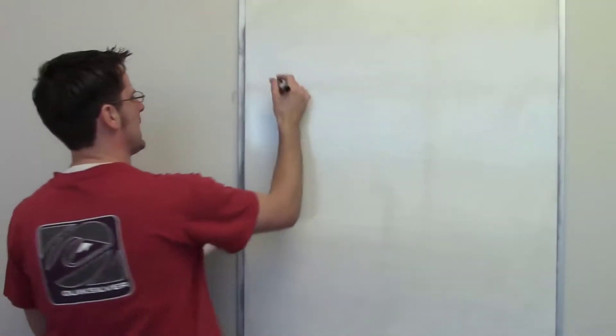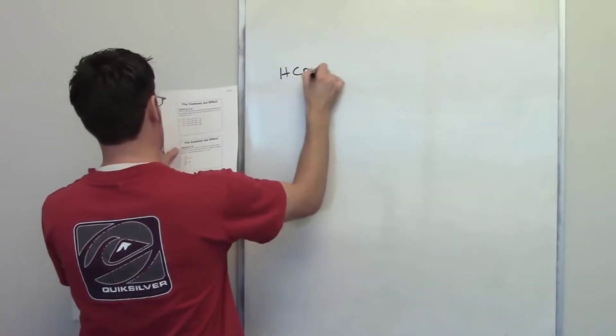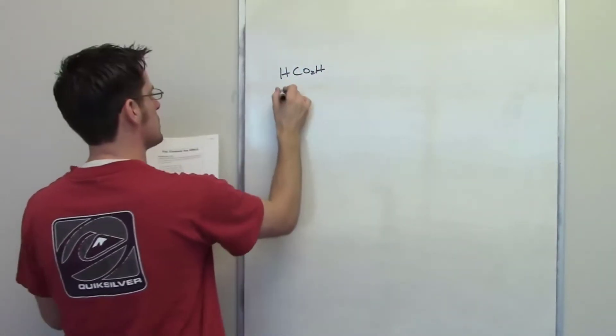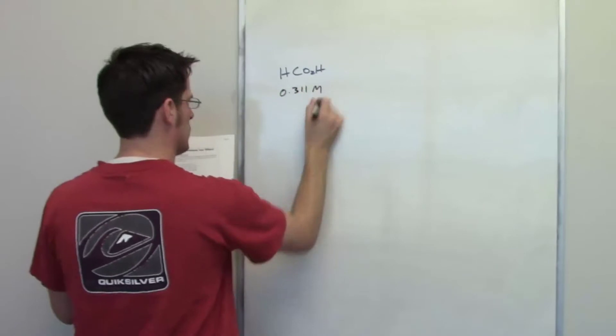This question involves formic acid, another weak acid, and it tells us that the solution is 0.311 molar in formic acid.